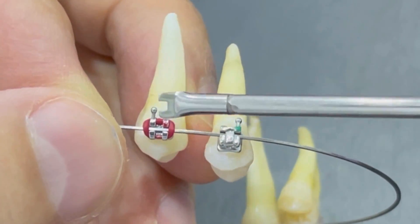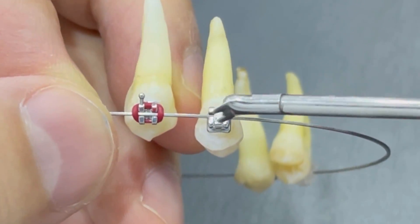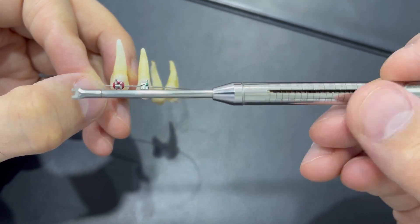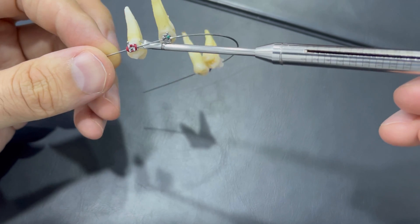The difference between normal traditional ligating braces and self-ligating braces. This is a 1725 steel wire and this is the force gauge. We are going to measure the force needed to move each type of braces.